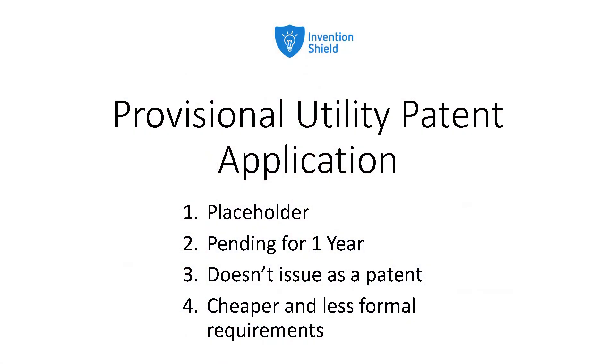The utility application has two variations: the non-provisional and the provisional. A provisional patent application is really just a placeholder application that secures you a filing date. It doesn't get examined and it can't issue as a patent. You might use a provisional application if you have a limited amount of time to prepare the application, or if your invention is still in further development, or simply for budget reasons.